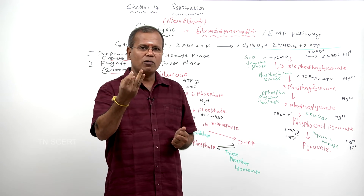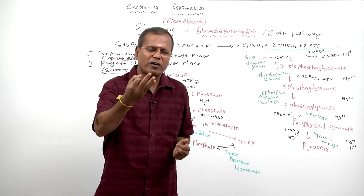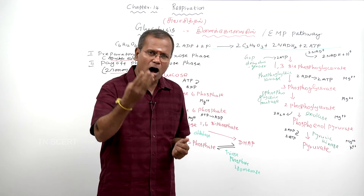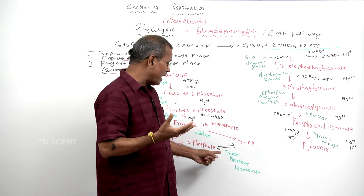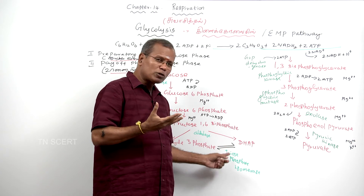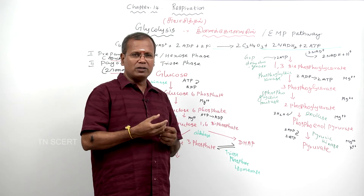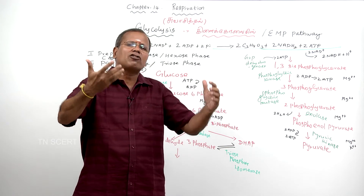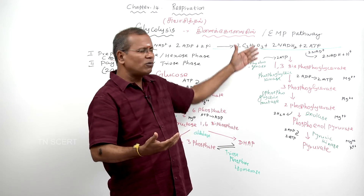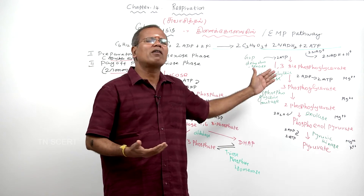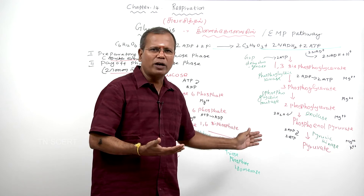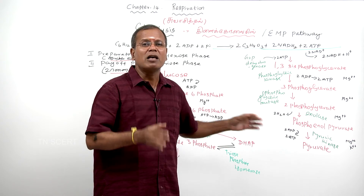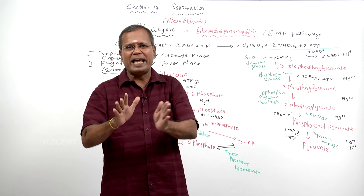The ten enzymes of glycolysis are: hexokinase, phosphoglucoisomerase, phosphofructokinase, aldolase, triose-phosphate isomerase, glyceraldehyde 3-phosphate dehydrogenase, phosphoglycerate kinase, phosphoglycerate mutase, enolase, and pyruvic kinase.